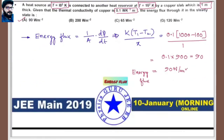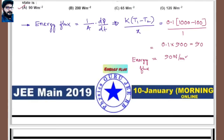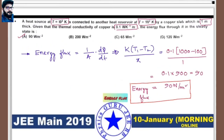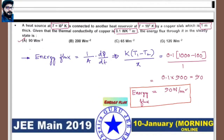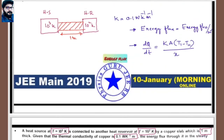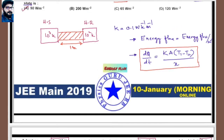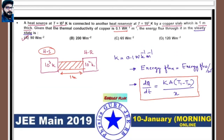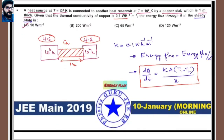So energy flux is energy per unit area. The formula is (1/A)·(dQ/dt), and in steady state dQ/dt = k·A·(T1−T2)/x. With the hot source and reservoir connected through the copper slab, we get energy flux = 90 W/m².